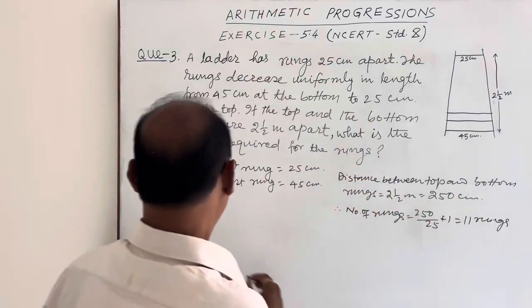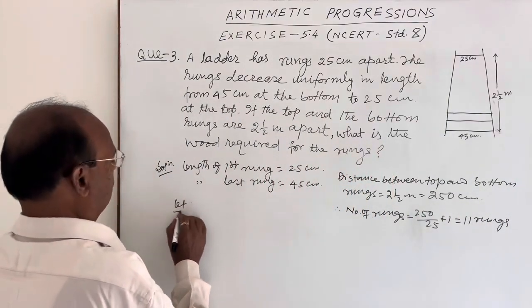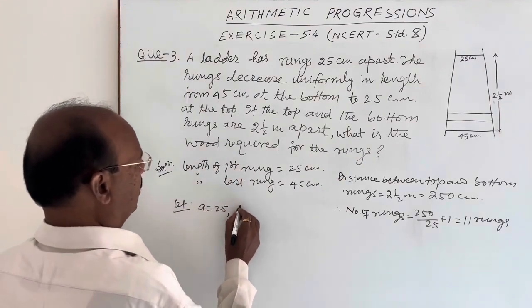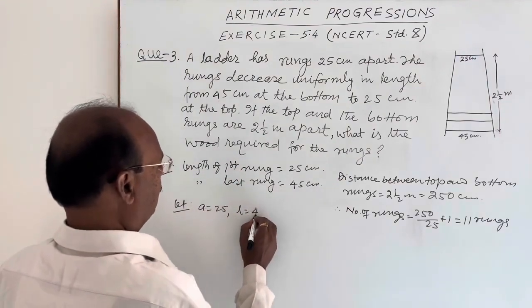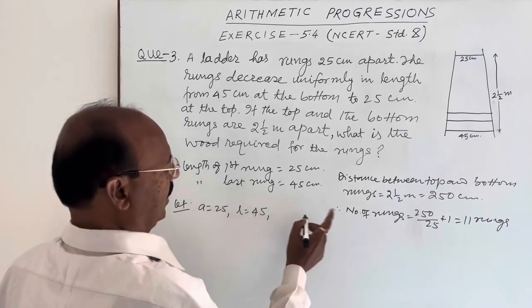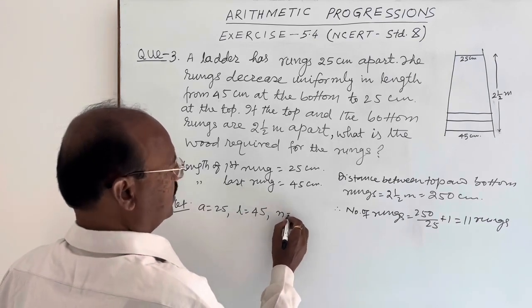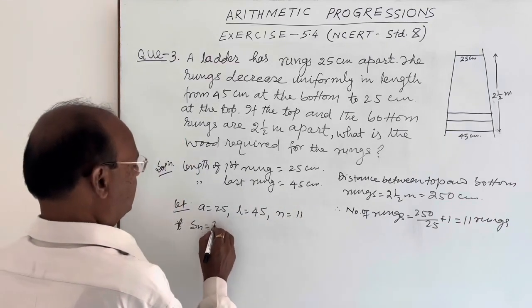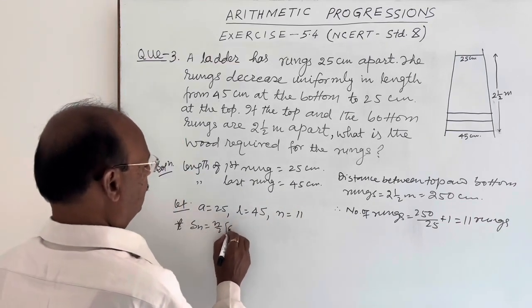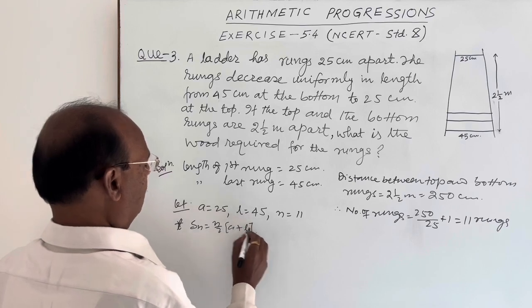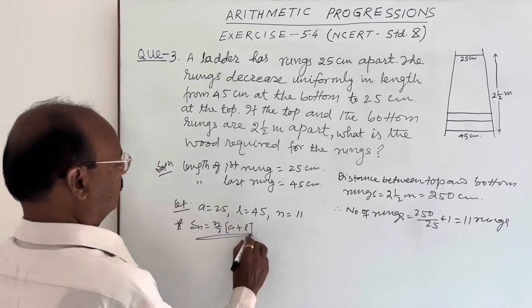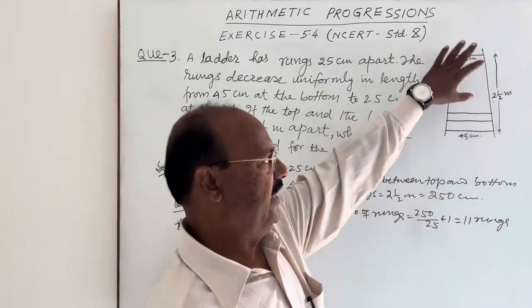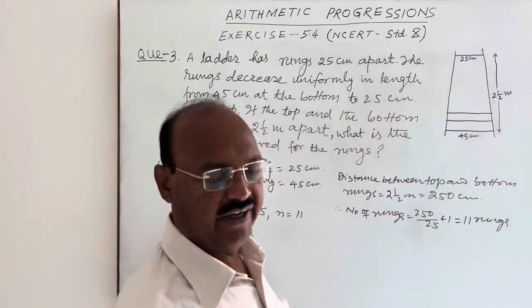So if we suppose first term of an arithmetic progression a is 25, last term of arithmetic progression is 45, and number of terms of an arithmetic progression is 11. We can use the formula Sn is equal to n by 2 times a plus l to find the total length of the rungs required for making this ladder.